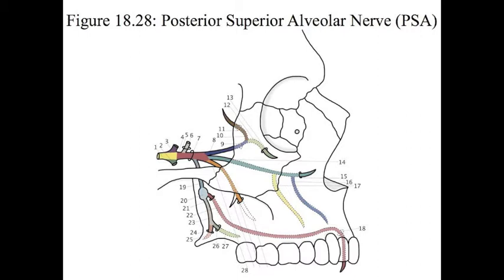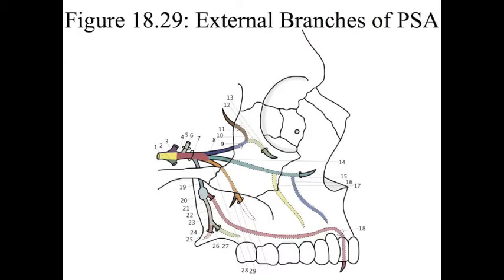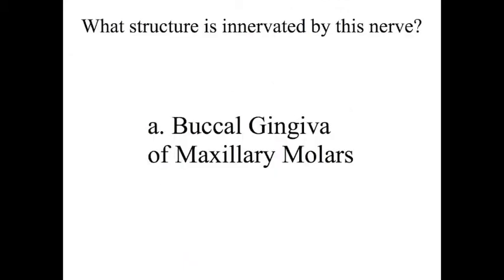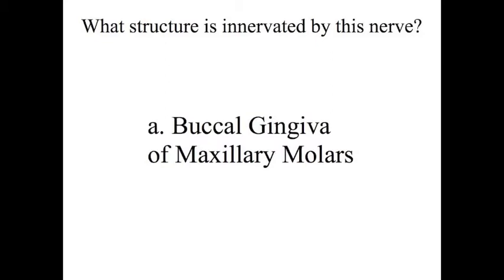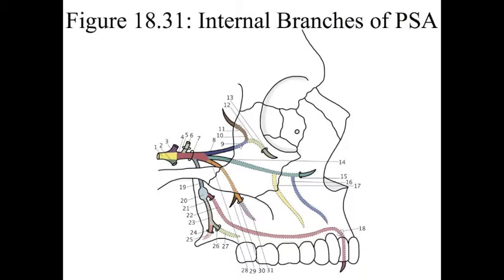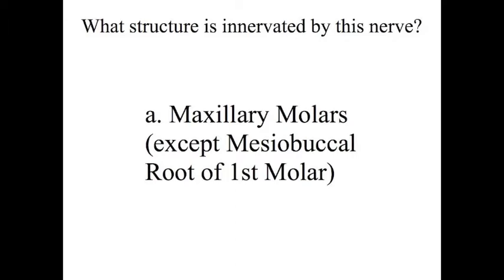Number 28 is the posterior superior alveolar nerve. It has both internal and external branches. Number 29 is the external branches of the posterior superior alveolar nerve — it innervates the buccal mucosa for the maxillary molars. Number 30 is the posterior superior alveolar foramen. Number 31, the internal branches of the posterior superior alveolar nerve, enter through this foramen. Those internal branches of the PSA innervate the maxillary molars, except for the mesiobuccal root of the first molar, which is innervated by the middle superior alveolar nerve.